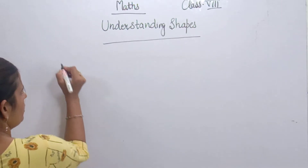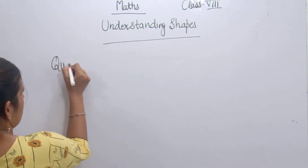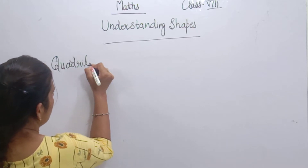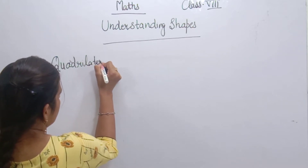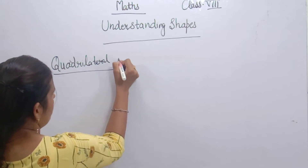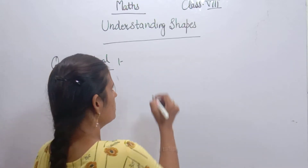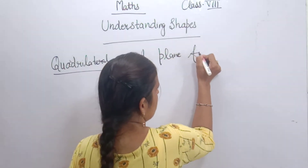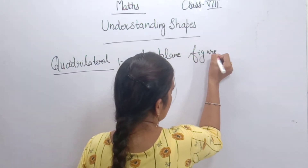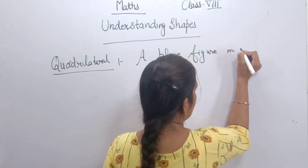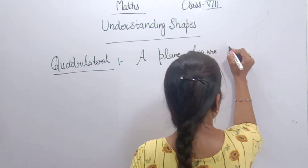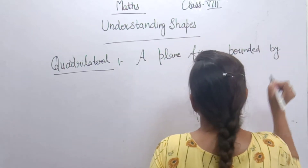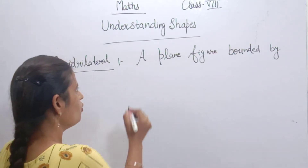First of all we will start with the Quadrilateral. What is a Quadrilateral? A Quadrilateral is a plane figure bounded by four line segments.